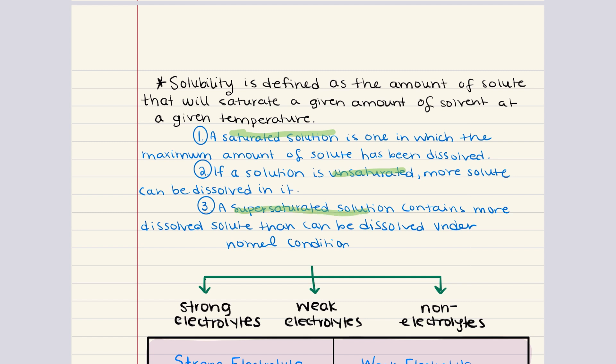And then last, we can discuss supersaturated solutions. So, a supersaturated solution contains more solute than what can typically be dissolved in the solvent at a given temperature and pressure. And this state is achieved by dissolving the solute at a higher temperature and then slowly cooling the solution without disturbing it. So, supersaturated solutions, they're metastable, meaning they can precipitate the excess solute rapidly if they're disturbed or if a seed crystal is introduced.